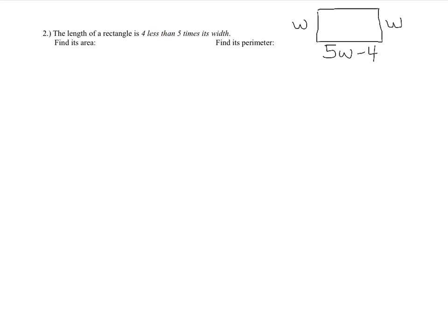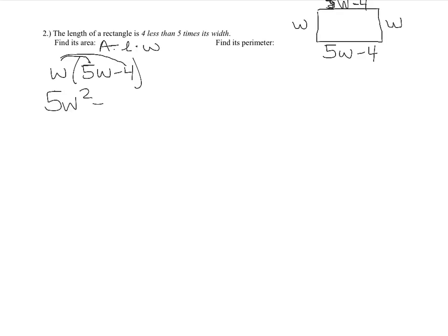Draw a rectangle and label all four sides: two sides are 5w minus 4 and two sides are w. To find the area, multiply length times width: w times (5w minus 4). This is a monomial times a binomial, so just distribute: w times 5w is 5w squared, minus w times 4 is 4w — giving 5w squared minus 4w.